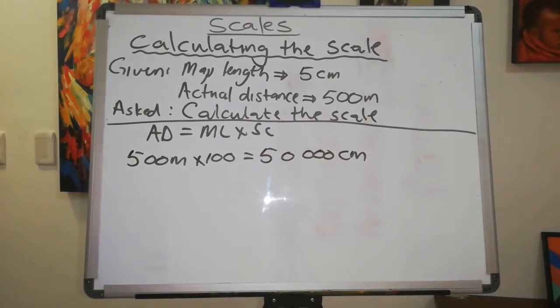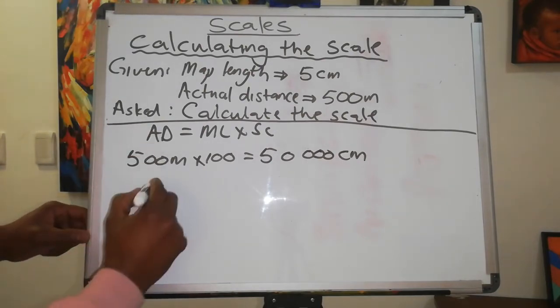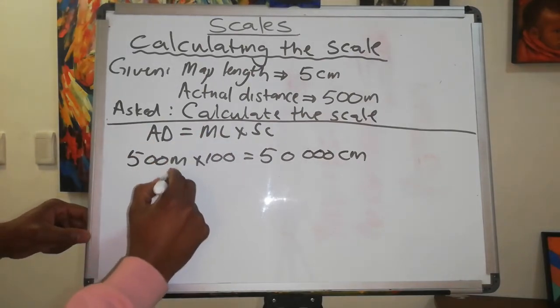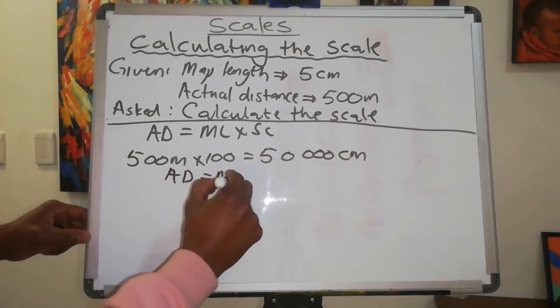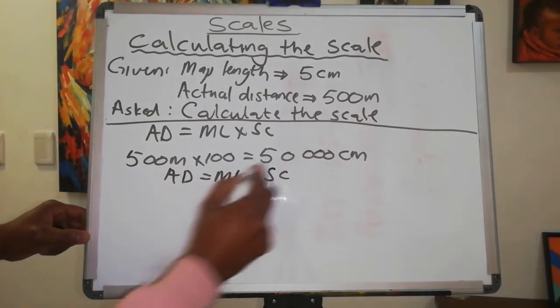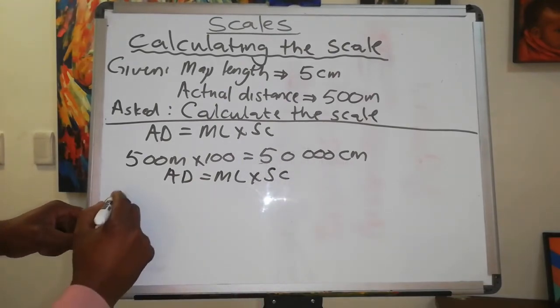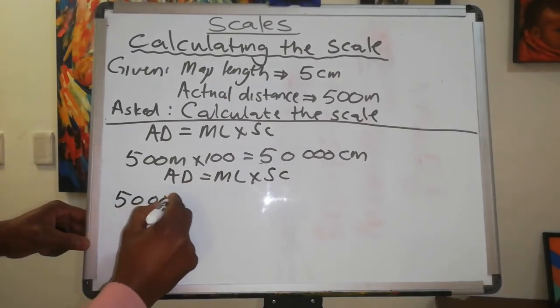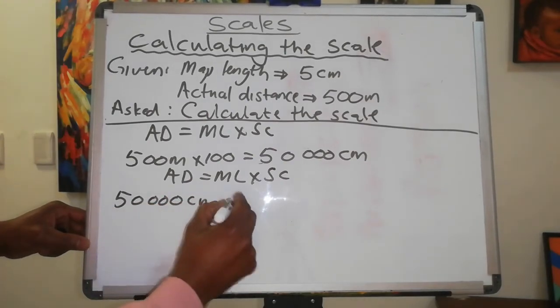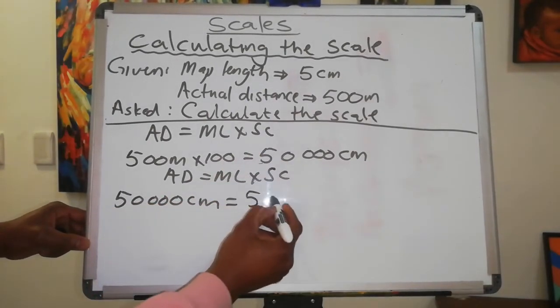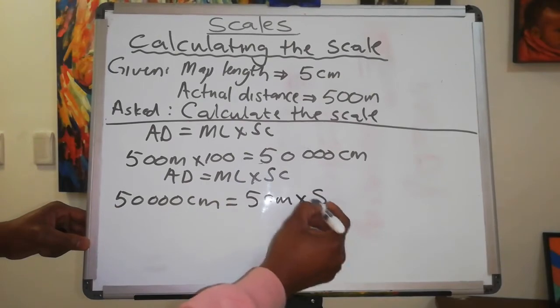So the 50,000 centimeters will be used in our equation. So let's do the substitution. Let's rewrite that: actual distance equals map length times the scale. So the actual distance is now 50,000 centimeters. The map length is 5 centimeters times the scale.